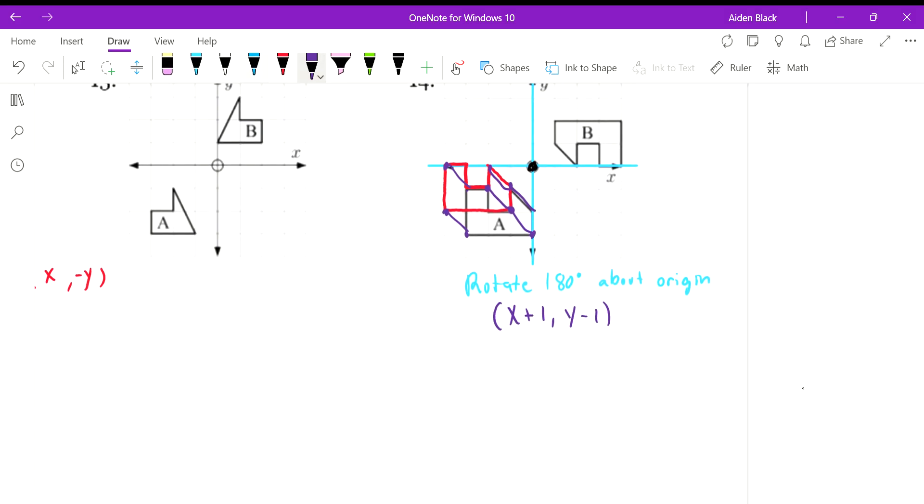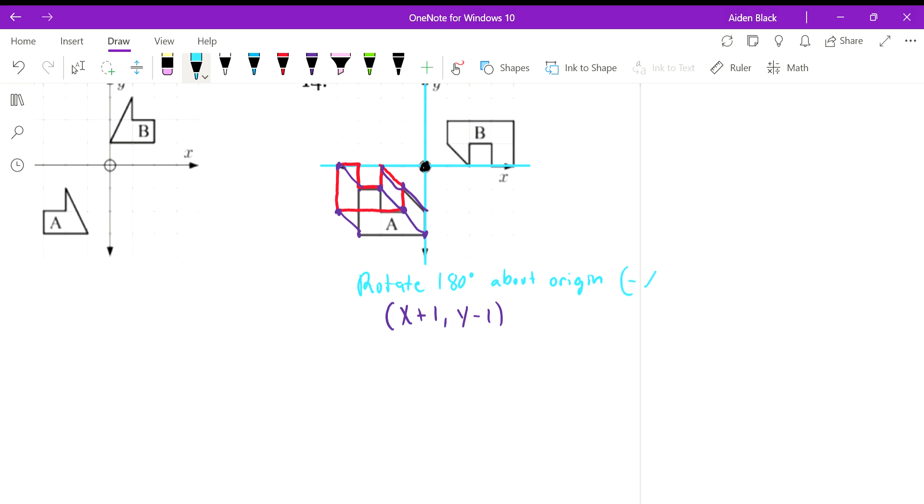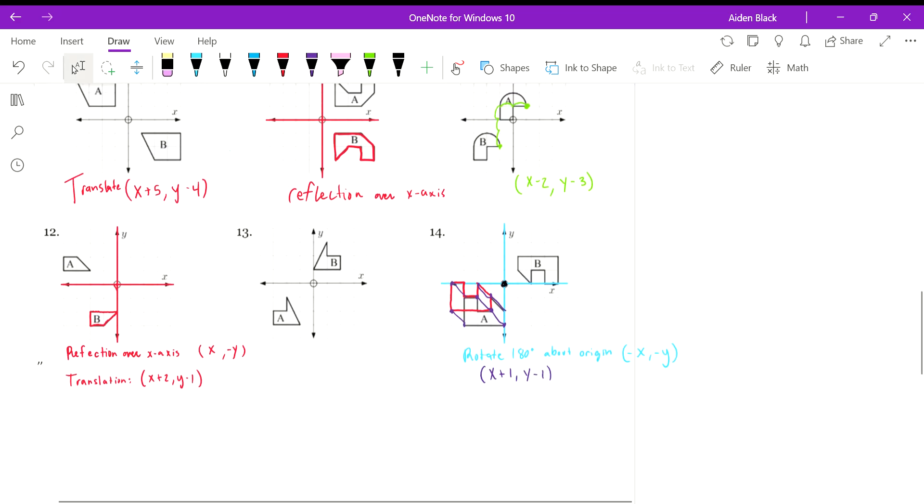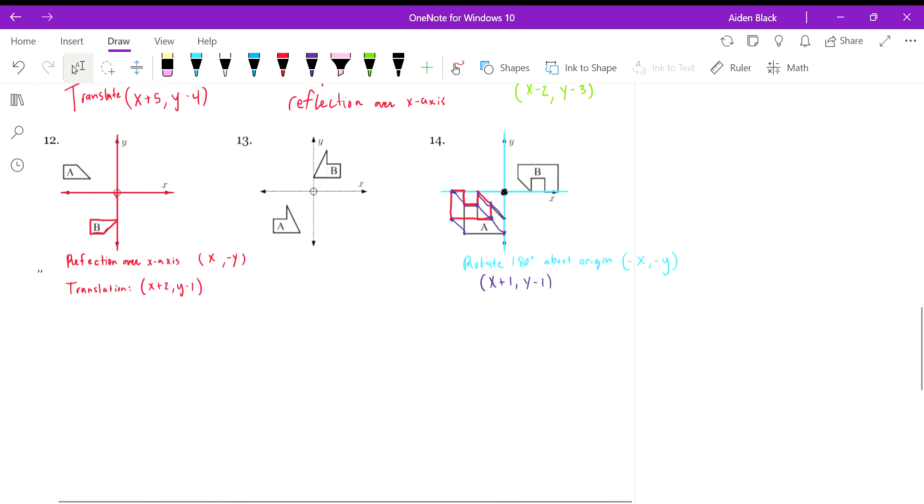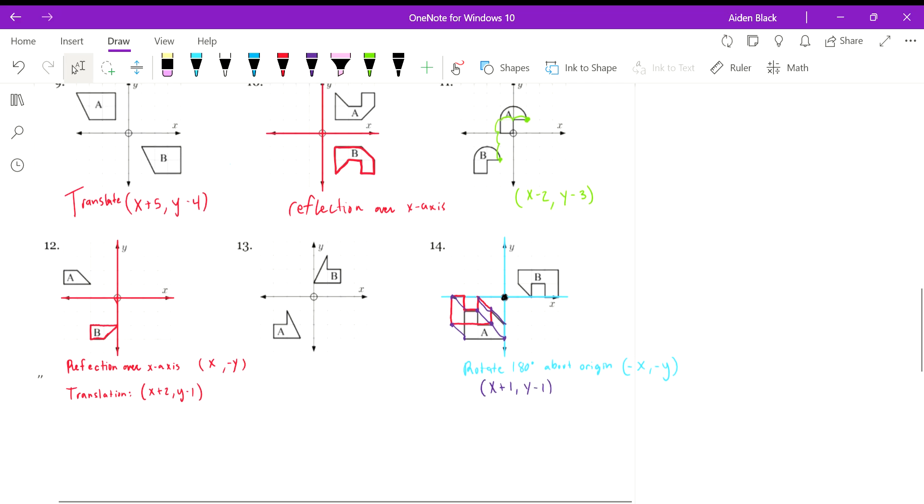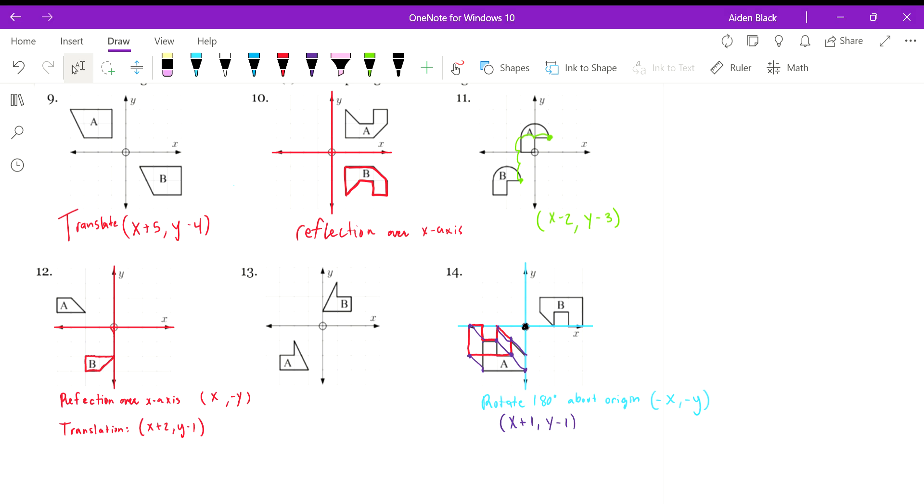And the rule for 180 degree rotation can be written like this. Negative x comma negative y. You have all of those notes on the 5.3 notes under the congruence transformations. Okay. Rotation 90 degrees 180 degrees reflection translation all of those. Okay. Cool. I'm out of time.